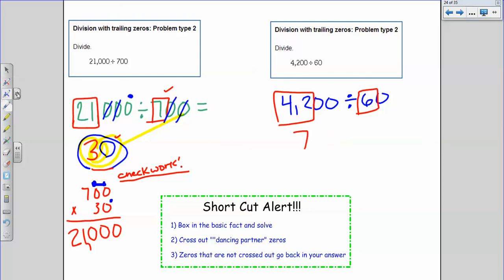Now I'm going to start crossing off my dancing partners here, my zeros, right? So this zero has a dancing partner over here. Does this guy have a partner over here at all? You should probably put an equal sign. Does this guy have a dancing partner over here at all? Nope, he doesn't. So he's my leftover zero. I'm going to put him down here in my final answer. So I think my answer is going to be 70.